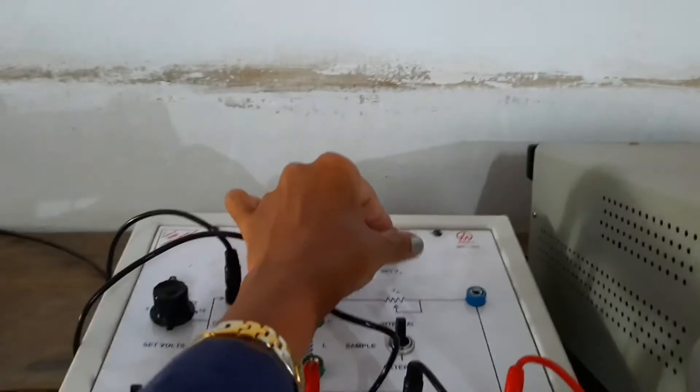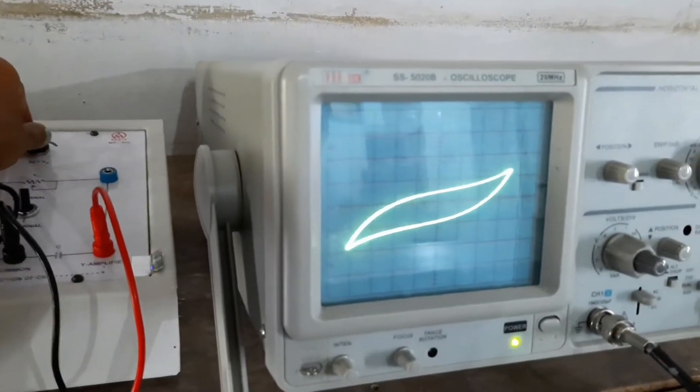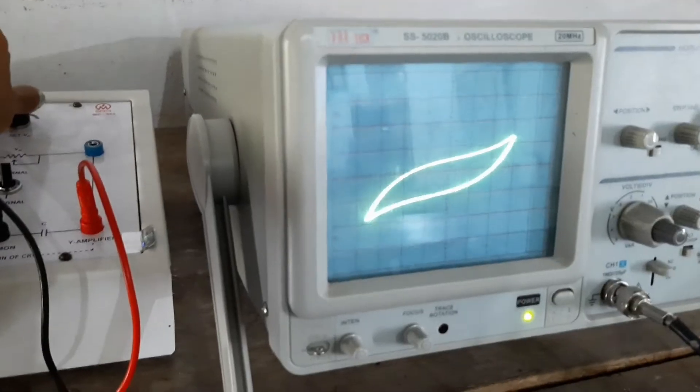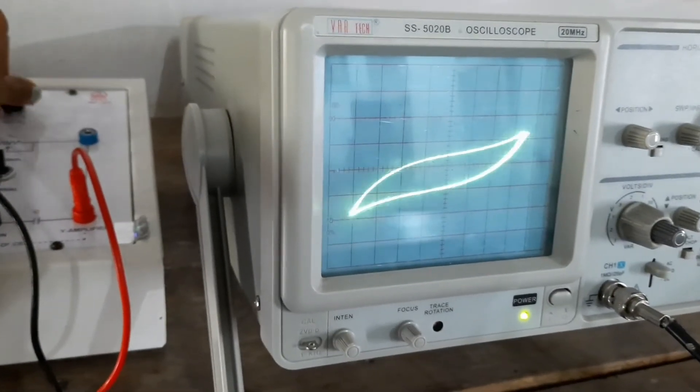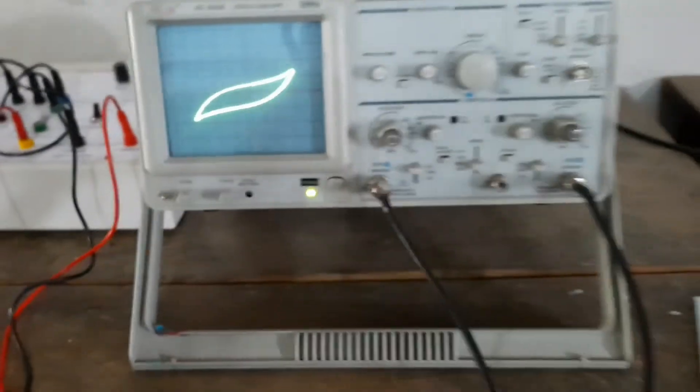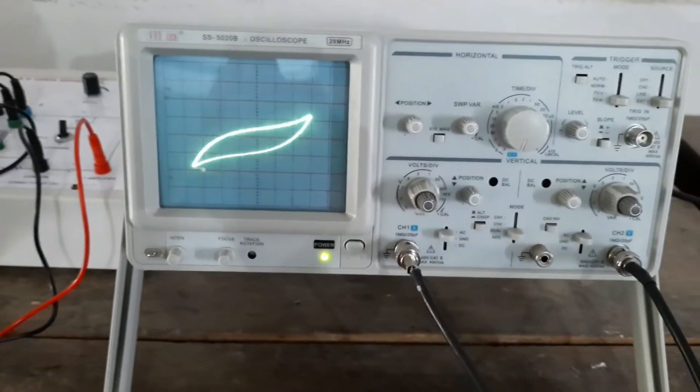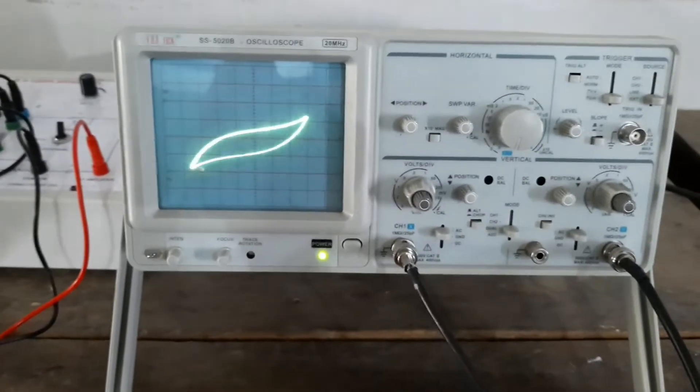And just you can use this knob to increase or decrease the curve. Just you can see, so this is the way to obtain BH curve according to your experimental requirements, parameters that you want to calculate or find out.